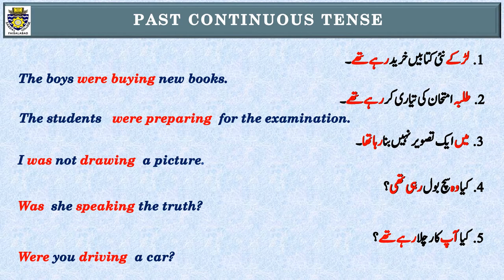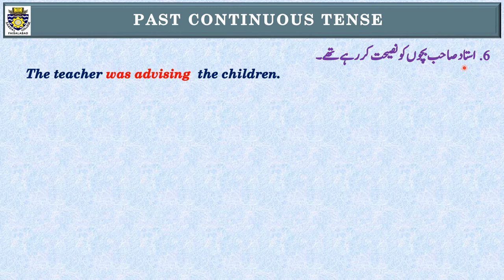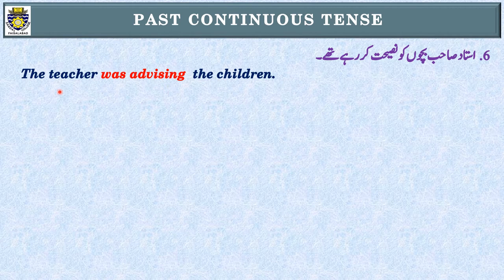Let's see some more examples. Sentence number six: استاد صاحب بچوں کو نصیحت کر رہے تھے۔ First step: 'رہے تھے' — Past Continuous Tense کی پہچان۔ Second step: subject — 'استاد'، جس کی English 'the teacher' ہے — singular noun، اس کے ساتھ was use کریں گے۔ Third step: The teacher was advising the children.